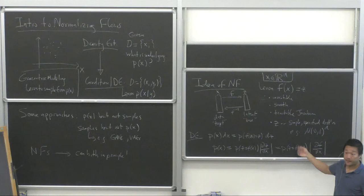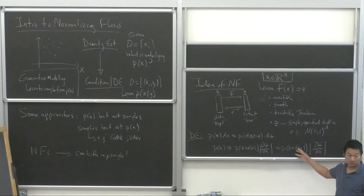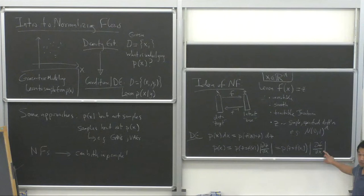In order to train this thing, we're going to have to evaluate this Jacobian many times — every mini-batch. So it has to be pretty fast to compute for this whole thing to be feasible. That's how we do density estimation.